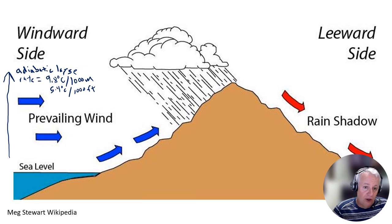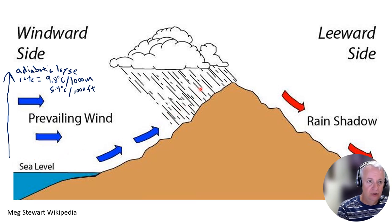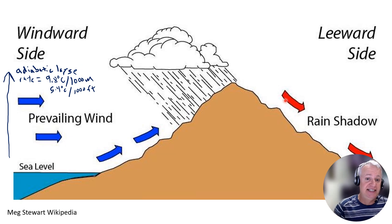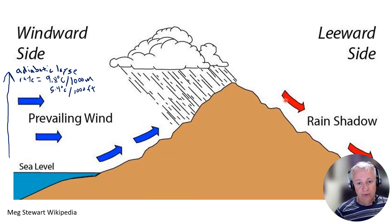Cool air can hold less moisture than warmer air. So as air masses move up the windward sides of mountains and cool, precipitation happens. As you go up in elevation on the windward side, you tend to get an increase in precipitation. As those air masses reach the tops of mountains and move down the other side, they're basically depleted in moisture. As those air masses move down the leeward sides of mountains, they're drier — there's a rain shadow. It's drier on the leeward sides of mountains.